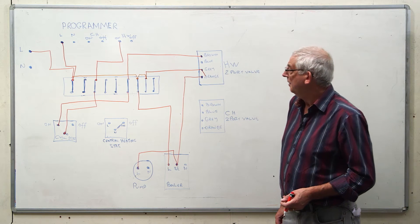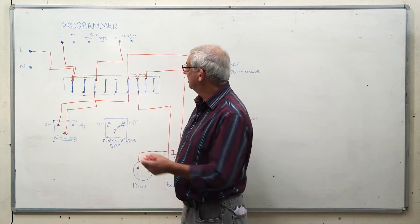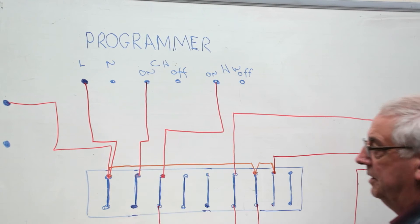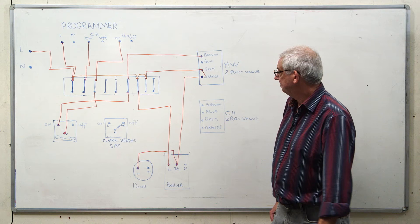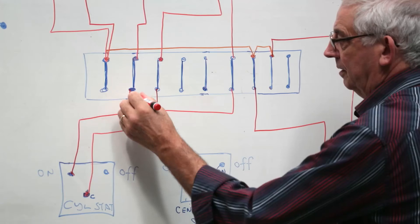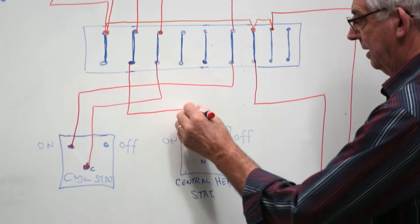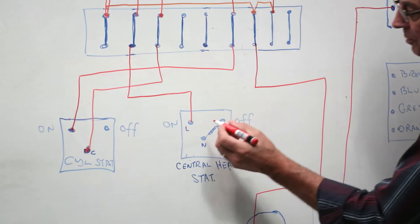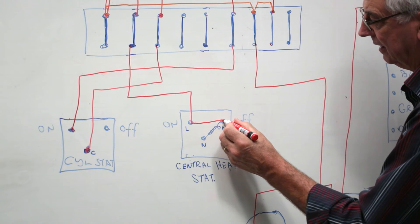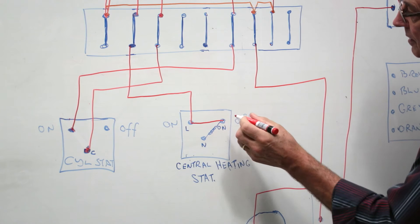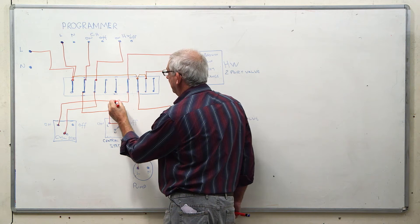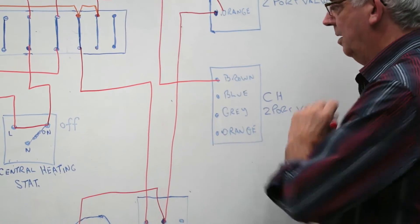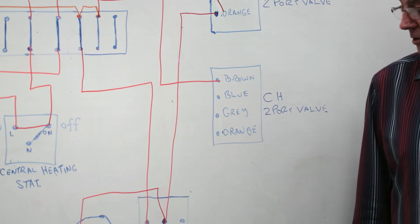If we look at the central heating now, central heating is called for, so I send a signal to my wiring centre, from the wiring centre to the common of my thermostat. Thermostat's calling for heat, sends a signal back up to my central heating two port valve.